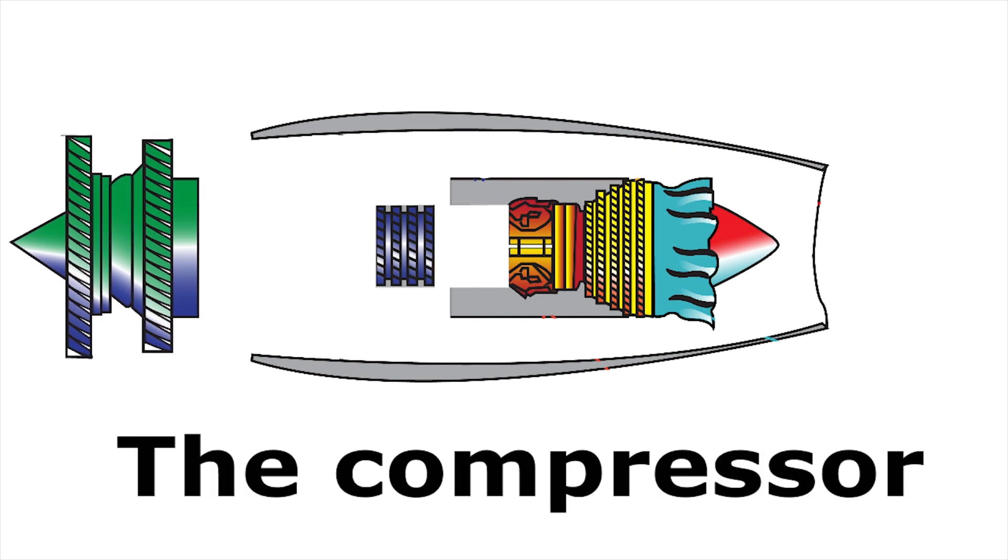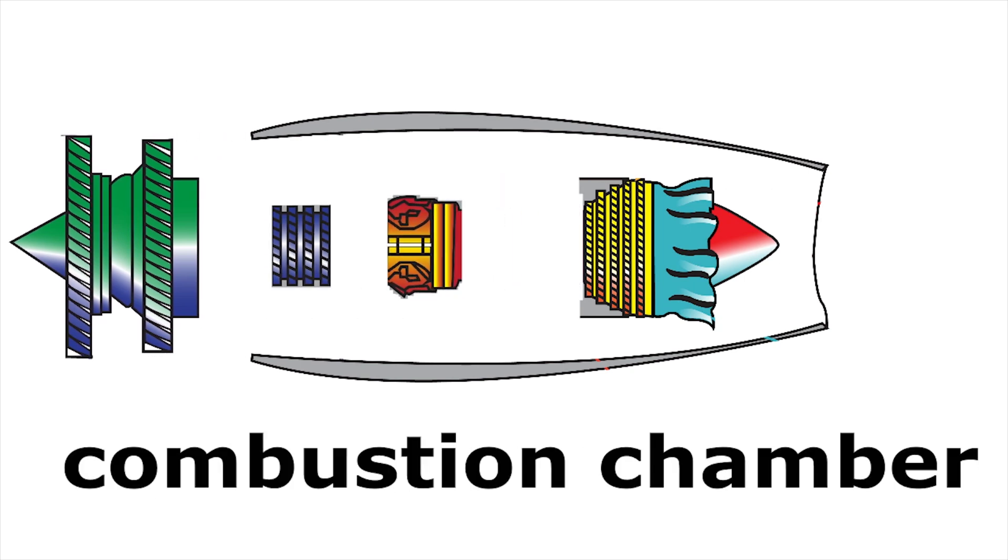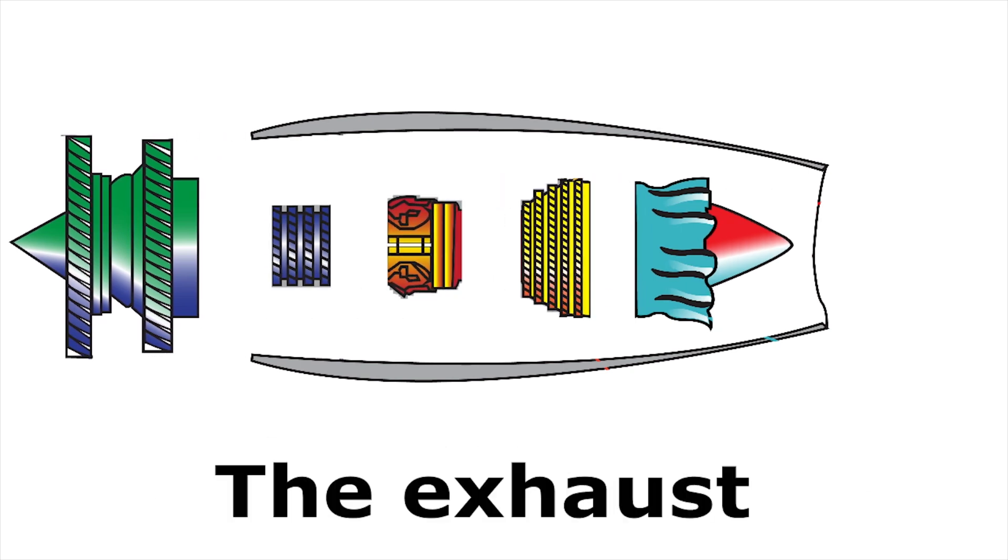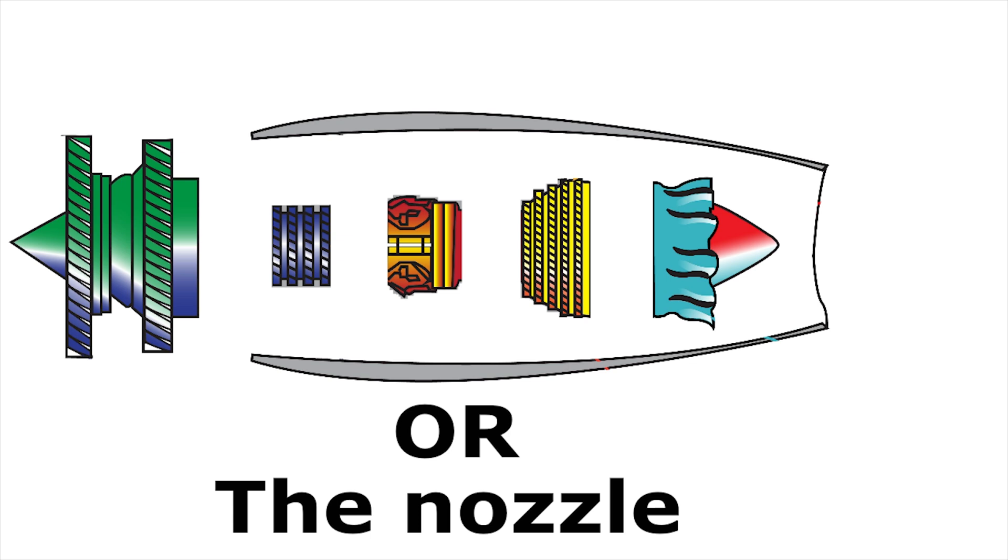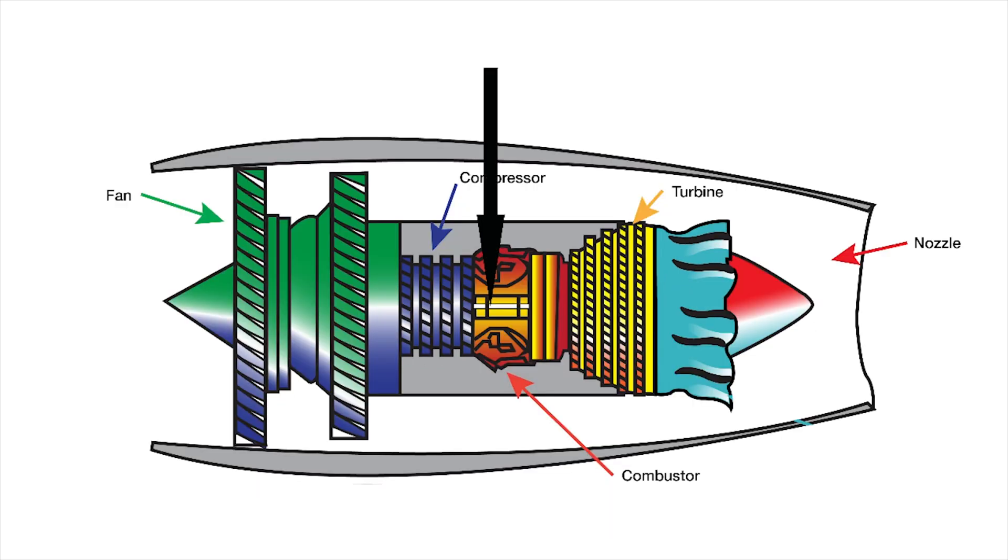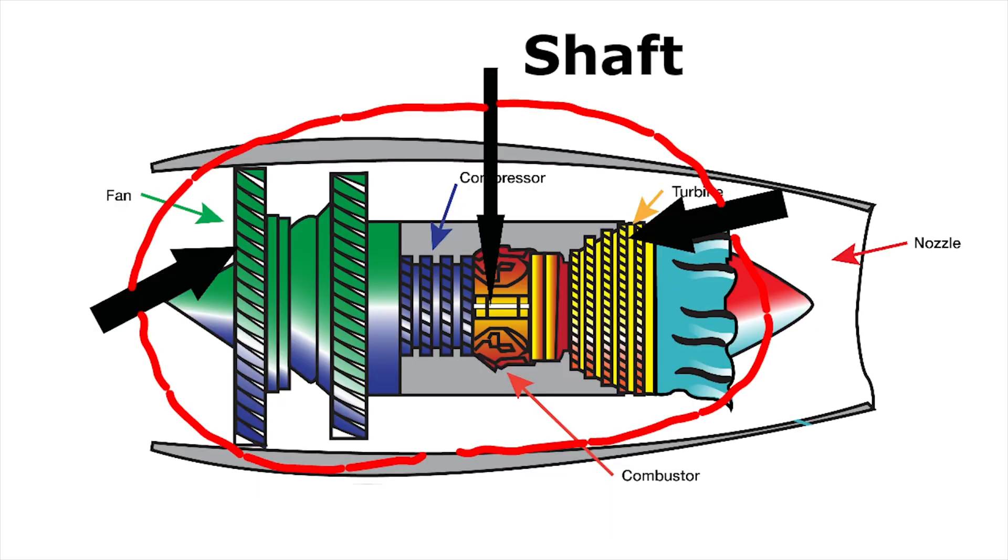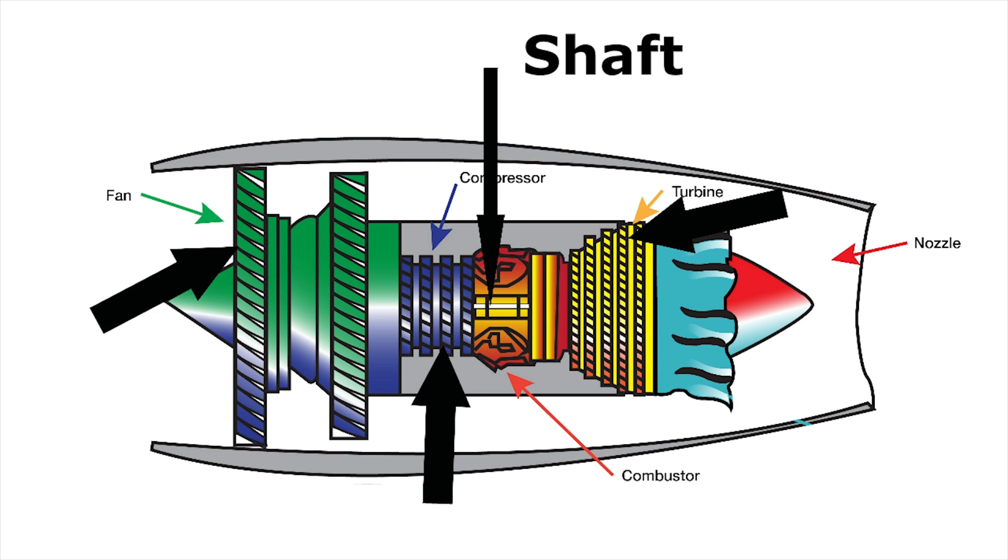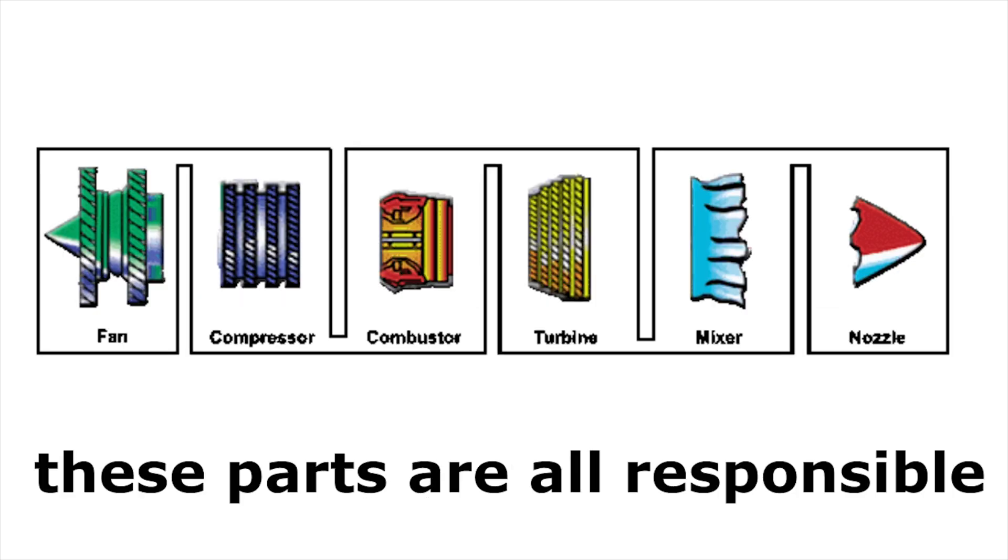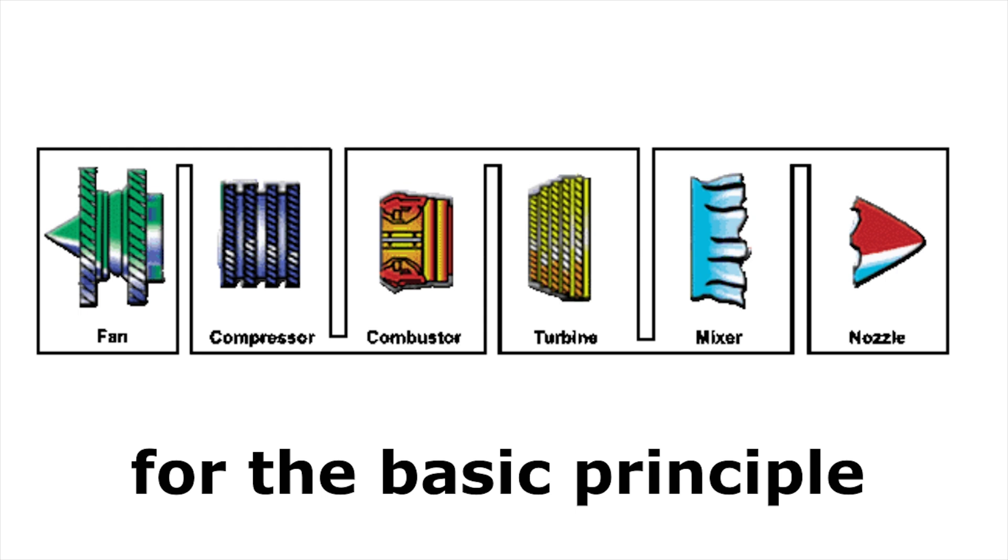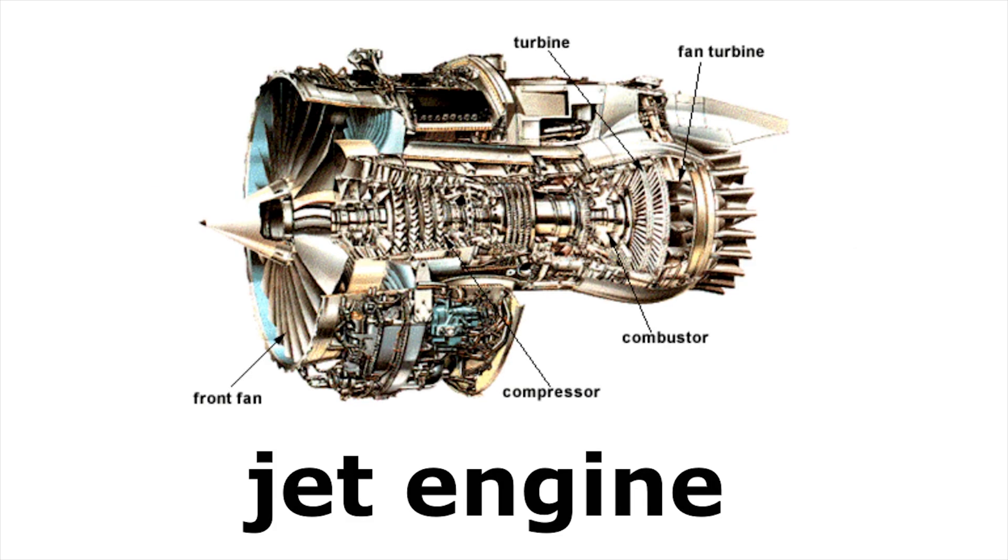We have the fan, the compressor, the combustion chamber, the turbine, and finally, the exhaust or the nozzle at the very end. At the very core of the engine, there's a shaft. Both the turbo and the fan and compressor are mounted onto the same shaft at opposite ends of the engine. Together, these parts are all responsible for the basic principle of most modern jet engines, which is this.